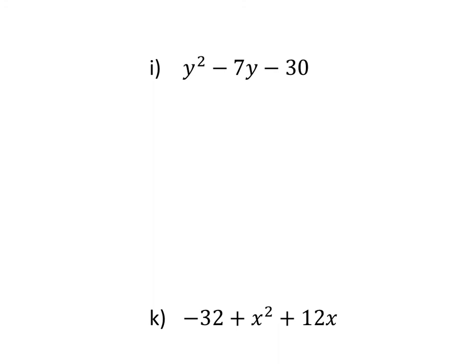Let's look at letter I. Check for descending order, in which it is in descending order or standard form. We're going to label it M-A-M. Leading coefficient is 1. Multiply together your M's. 1 times negative 30 is negative 30. And A is negative 7. So we have two negatives here.